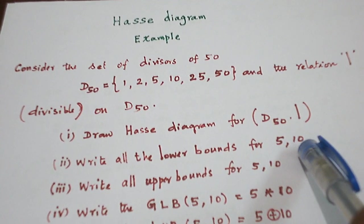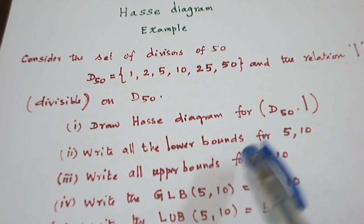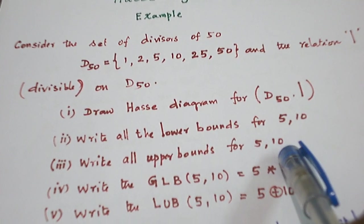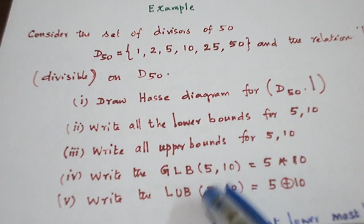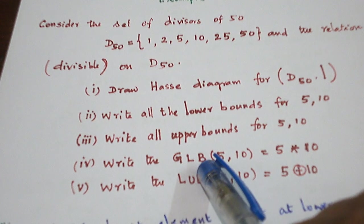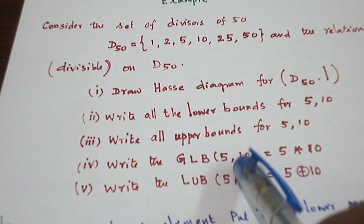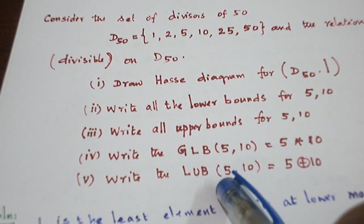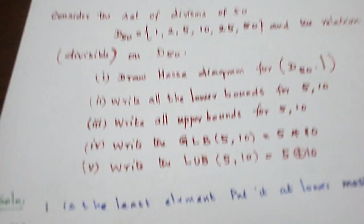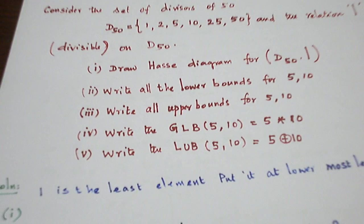Write all the lower bounds for the elements 5 and 10. Write all the upper bounds for the elements 5 and 10. From this, find out the GLB for {5, 10} and LUB for {5, 10}. This is the question.